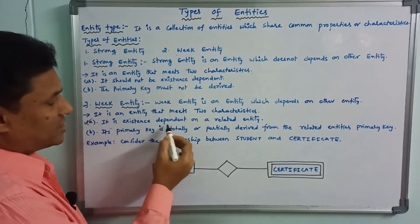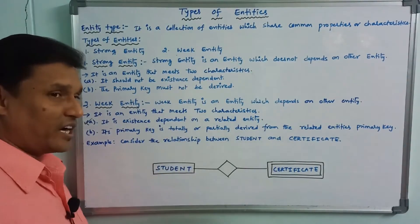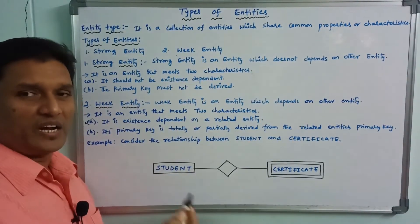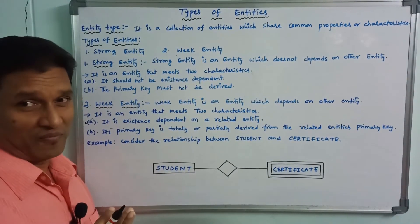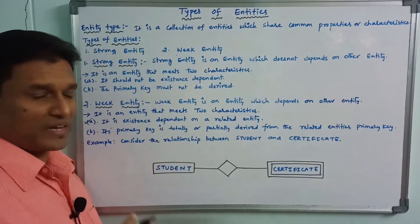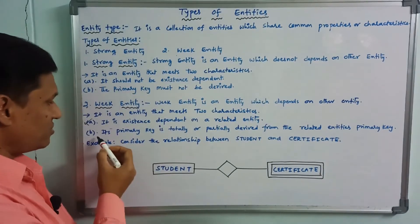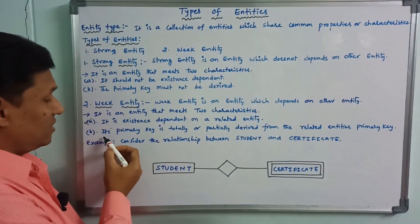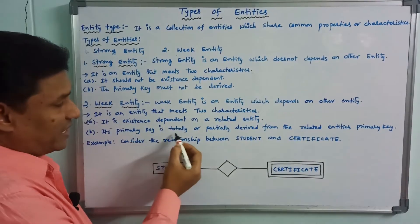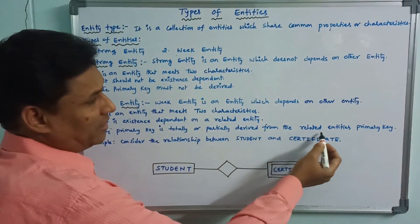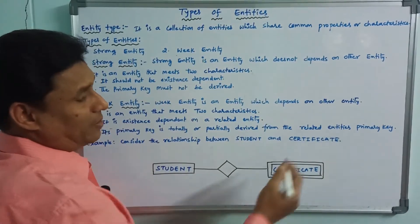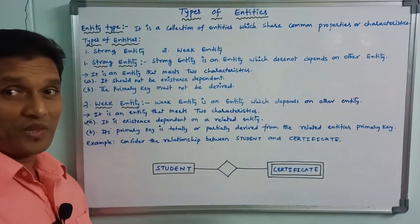A weak entity has two characteristics: first, it is existing-dependent on a related entity — it compulsorily depends on a related entity; second, its primary key is totally or partially derived from the related entity's primary key.